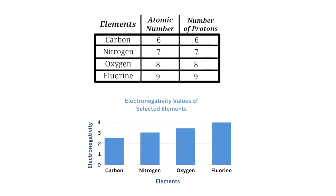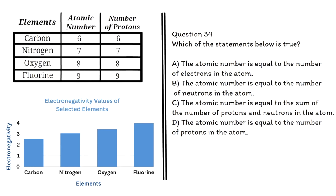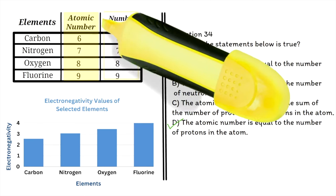The table and the corresponding graph display various properties of selected elements. The table lists the atomic number and number of protons of each element, while the graph displays the electronegativity values. Question 34: Which of the statements below is true? A. The atomic number is equal to the number of electrons. B. The atomic number is equal to the number of neutrons. C. The atomic number is equal to the sum of protons and neutrons. D. The atomic number is equal to the number of protons. The correct answer is D. We can see from the table that the atomic number is always the same as the number of protons.